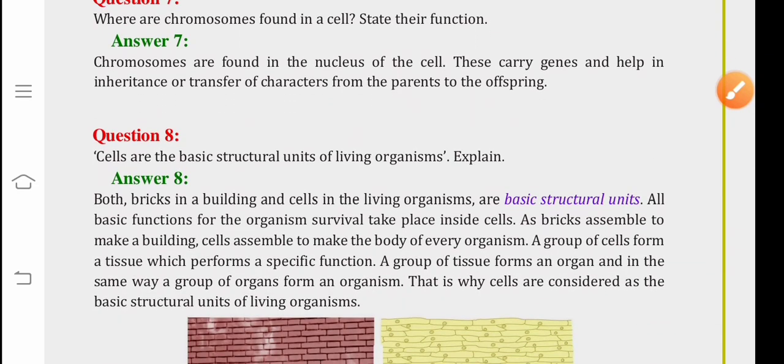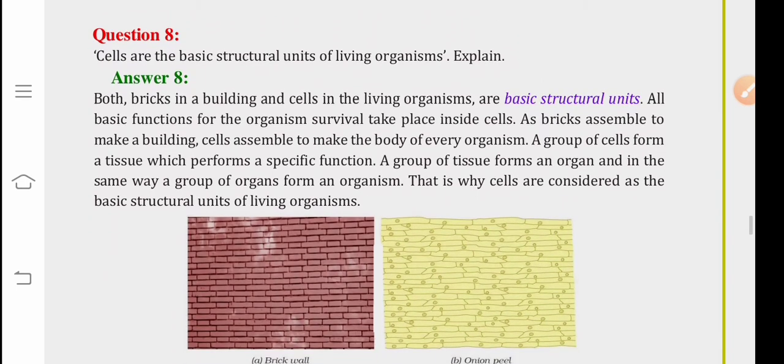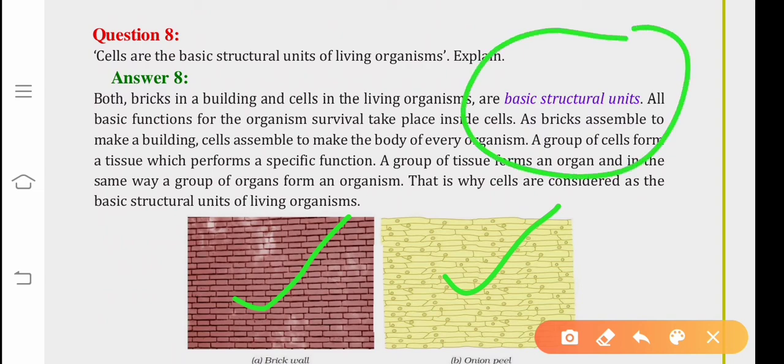Question number eight, cells are the basic structural units of living organisms. Explain this. We can explain it from the given diagram. Here is a brick wall and onion peel cell wall. Both bricks in a building and cells in the living organisms are basic structural units. All basic functions for organism survival take place inside cells.